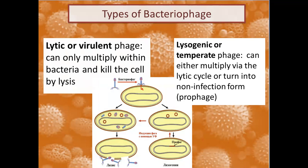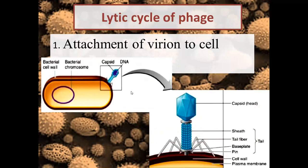There are two main types of bacteriophages according to their interaction strategy with the bacterial cell. Lytic or virulent phages infect the bacterial cell, multiply in it, and cause the death and lysis of the bacteria. Lysogenic or temperate phages can also multiply causing lysis, but sometimes they insert their DNA into the bacterial chromosome and turn into a non-infectious form named a prophage.